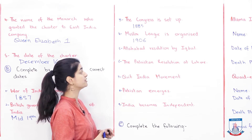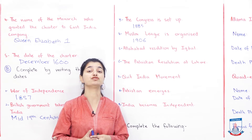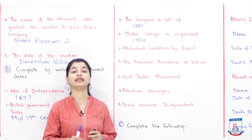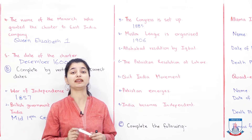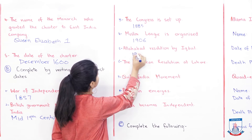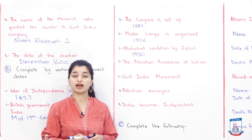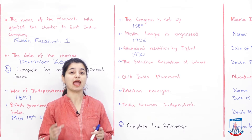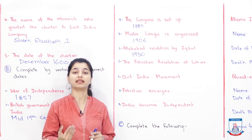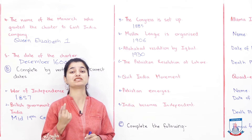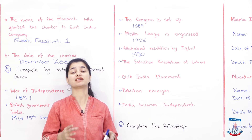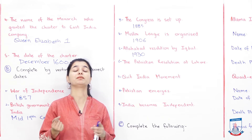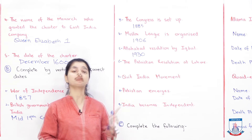Next we have the Allahabad Resolution by Iqbal. When was Iqbal's Allahabad Resolution? When we were studying about Iqbal in the lecture, we specifically underlined this date. It was 1930. His Allahabad address was when he gave a speech in Allahabad, saying that Muslims need a separate state. He was one of the first people to ever say that publicly, in 1930.